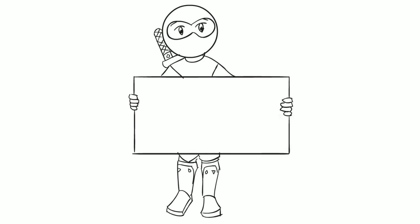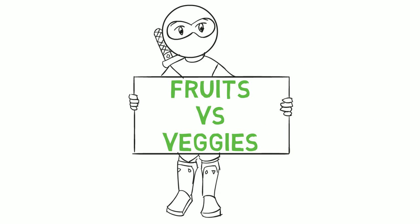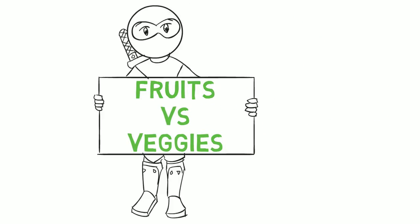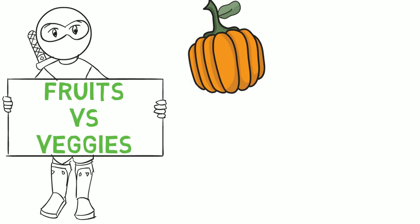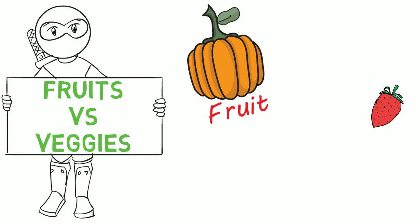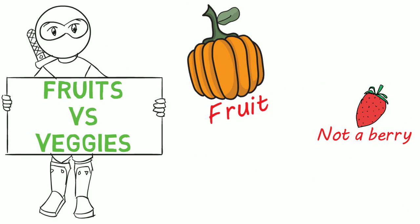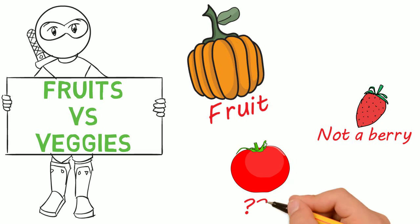Thanks for stopping by. Today we're talking about the difference between fruits and veggies. For example, did you know that pumpkin is a fruit? And strawberries aren't actually a berry? And a tomato? You'll have an answer to that by the end of this video.